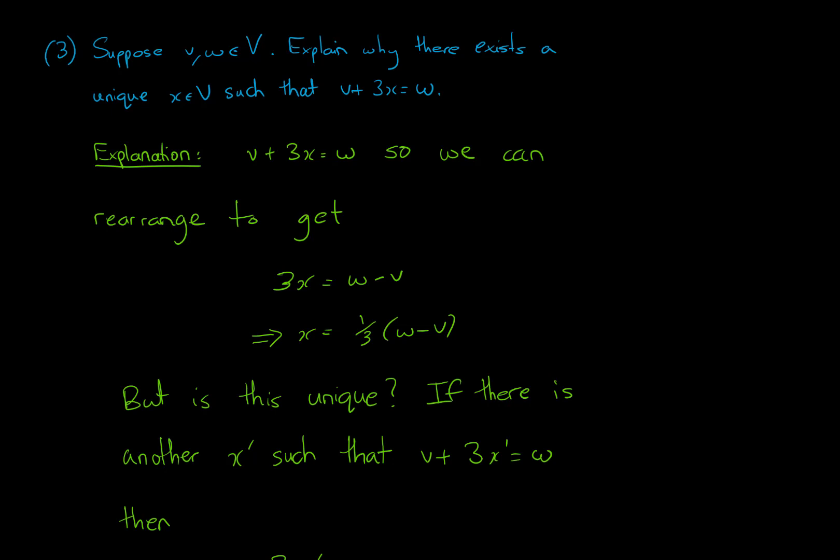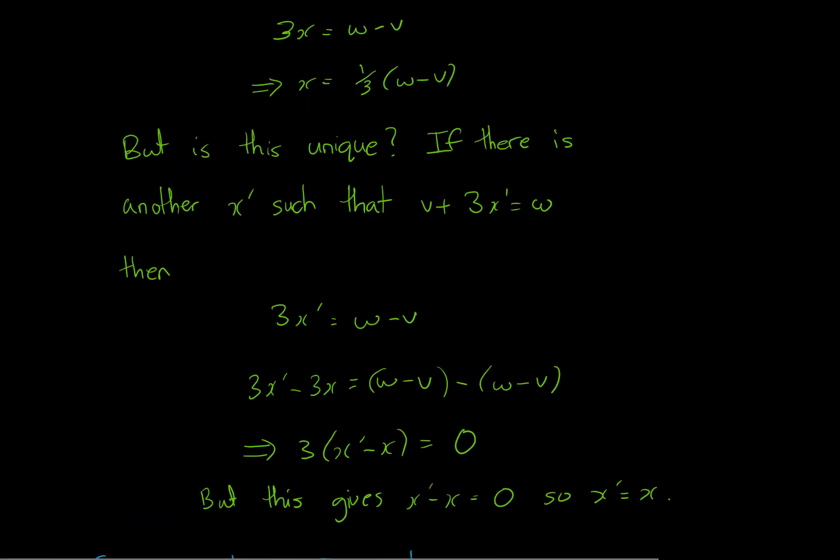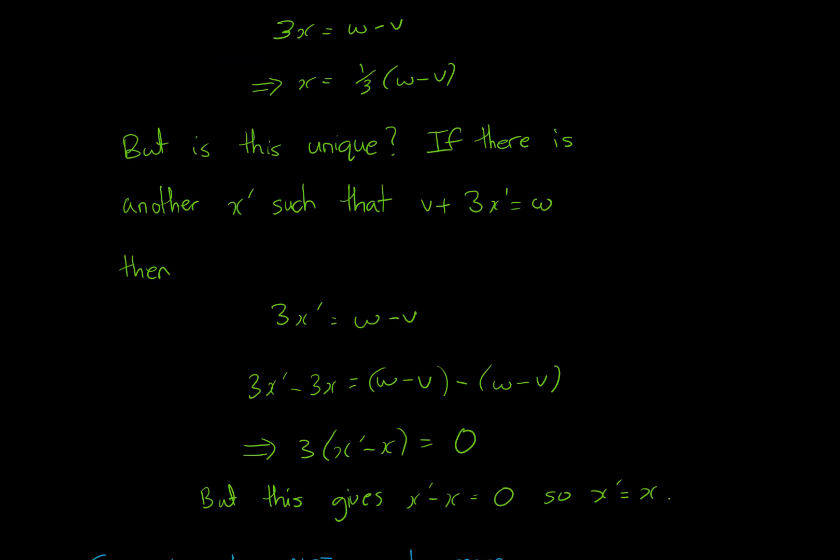But we really want to know whether this is unique or not. So we'll assume that there are two, so an x and an x prime, and see if they end up being equal. It turns out they are, because 3x prime, if x prime is such an alternative, is equal to w − v.